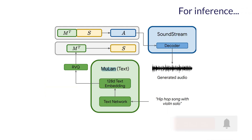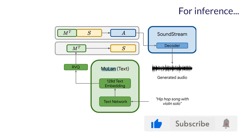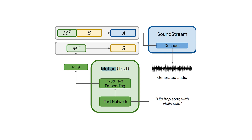And voilà! This is how Google Research was able to create a model generating music with such great results from simple text descriptions. But don't take my word for it — let's listen to a few more examples.